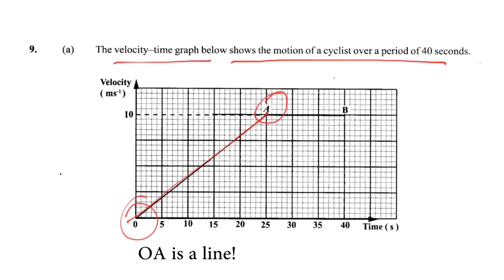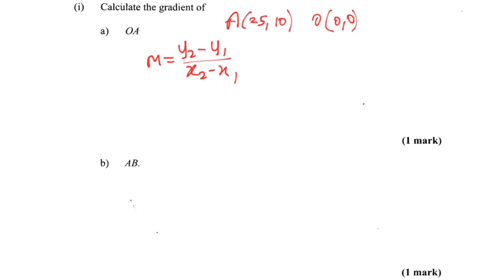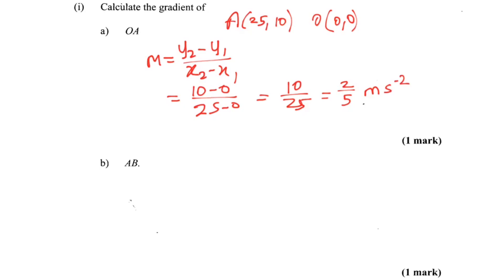Calculate the gradient of OA. OA is this point here. All I need is the coordinates of A and the coordinates of O, which is (0,0) — the origin. So A is (25, 10). The gradient is change in Y over change in X. That gives us 10 over 25, which simplifies to 2/5. And that is 0.4 meters per second squared, because the gradient on a velocity-time graph represents acceleration.